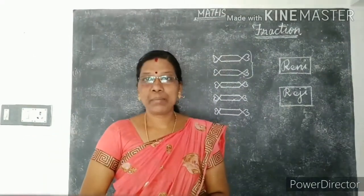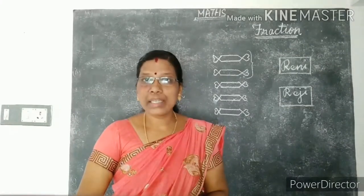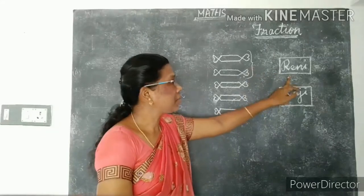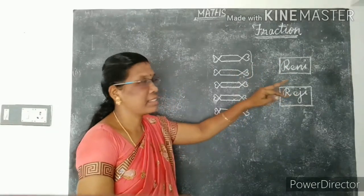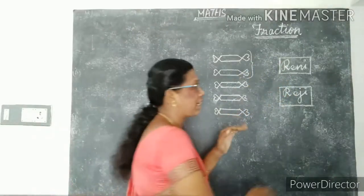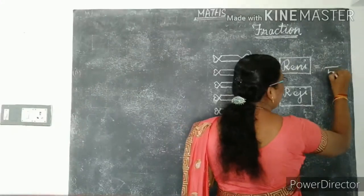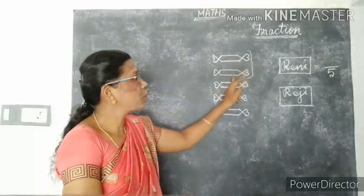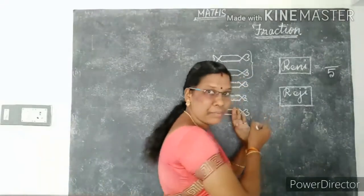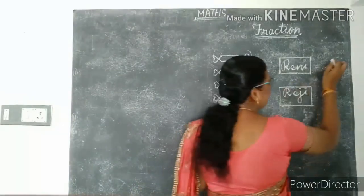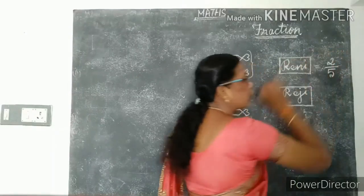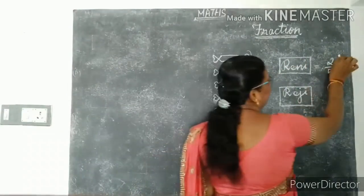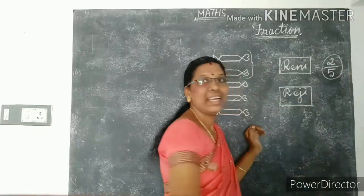Fraction represents part of a whole. The fraction of Rennie eating the chocolate — totally five chocolates, Rennie got two chocolates. Out of five, two she got. So two by five. This is the fraction.